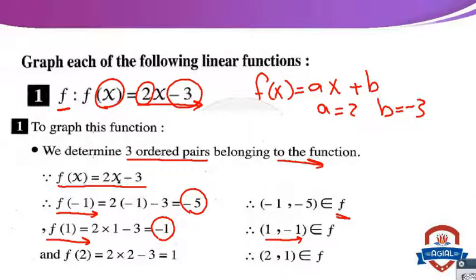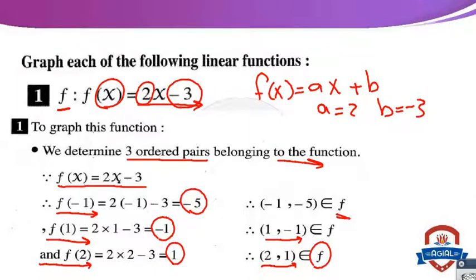Another ordered pair: f(2) equals 2 times 2 equals 4, and 4 minus 3 equals 1. So the ordered pair (2, 1) belongs to the function. We now have three ordered pairs: (−1, −5), (1, −1), and (2, 1) — all belonging to the function.